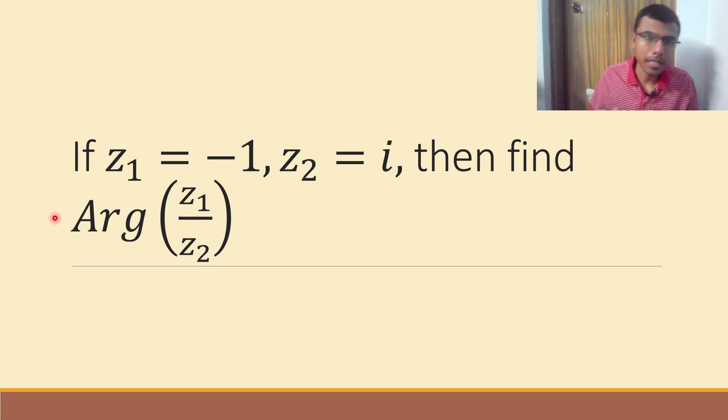Hello learners, here we are given that z1 is minus 1 and z2 is i. We need to find out argument of z1 by z2. First, before I find out the argument of z1 by z2, I need to know the argument of z1, next I need to know the argument of z2.